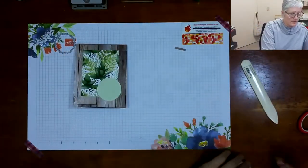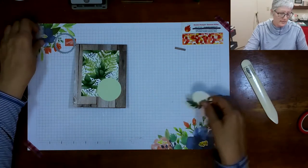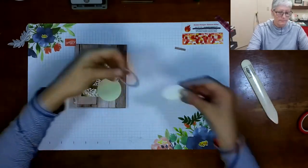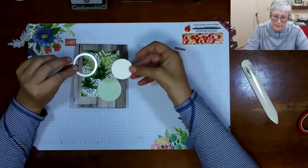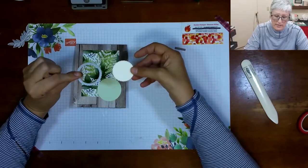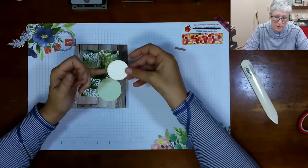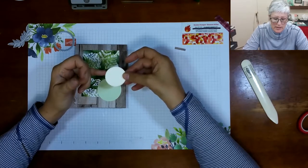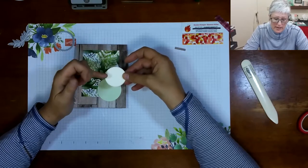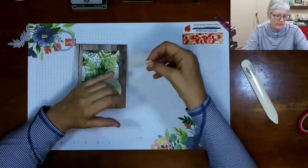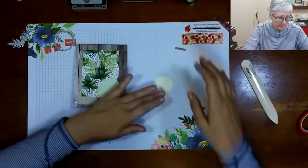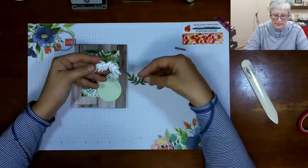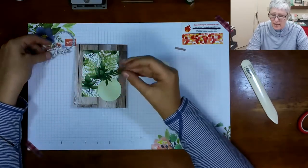Now I talked about those two die sets - the Tasteful Labels. I cut one of the vanilla labels out of this, and then the other piece I've cut is this dual piece of foliage. These are beautiful because they also give you embossed pieces on the leaves.